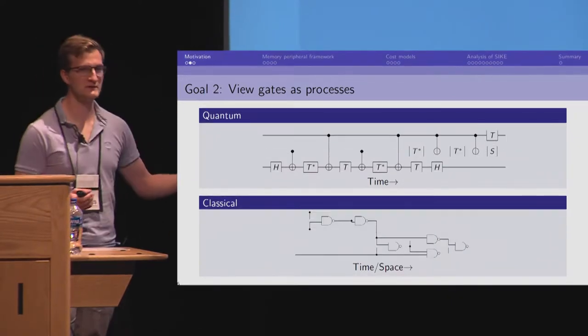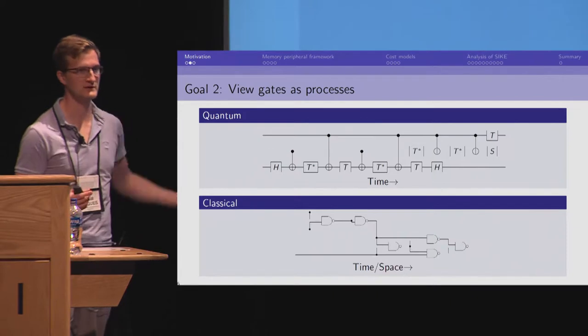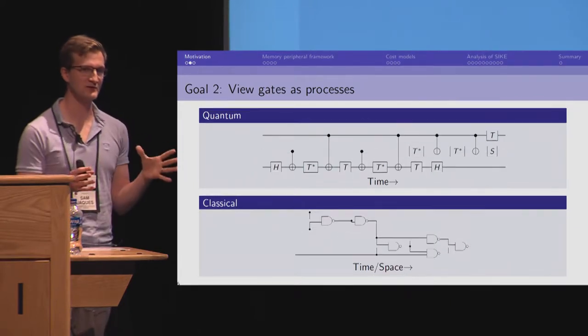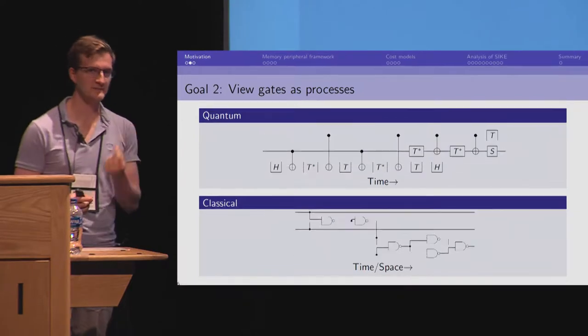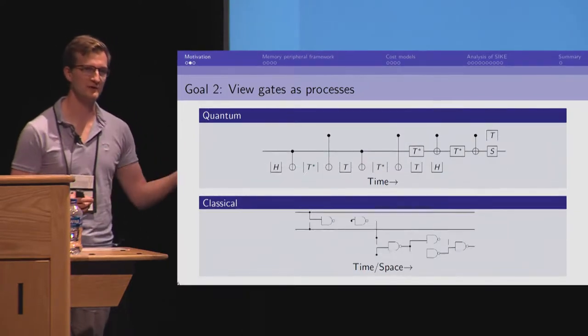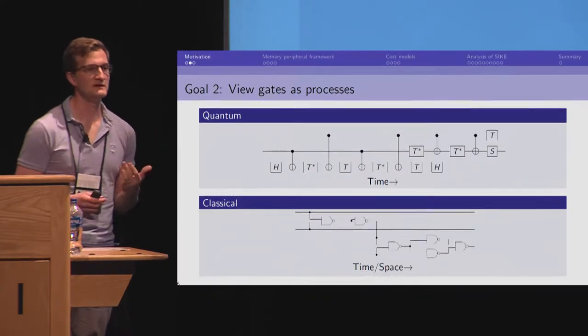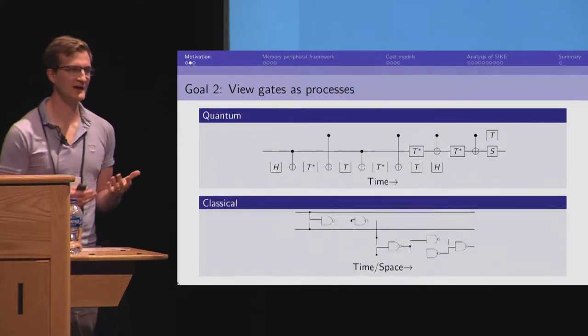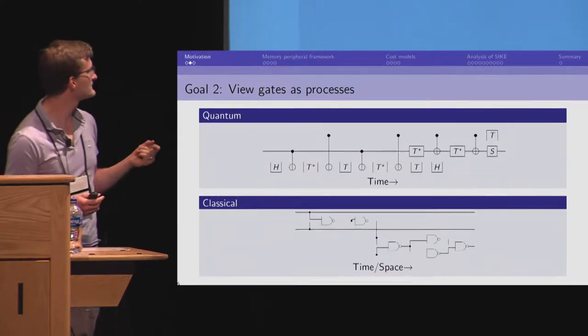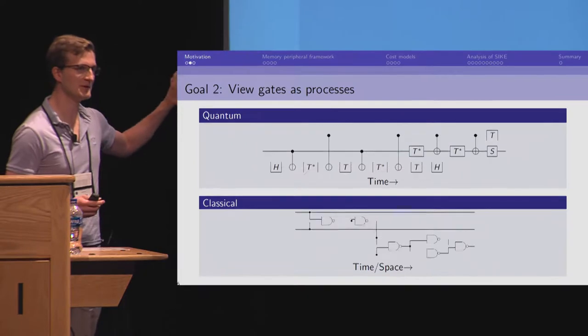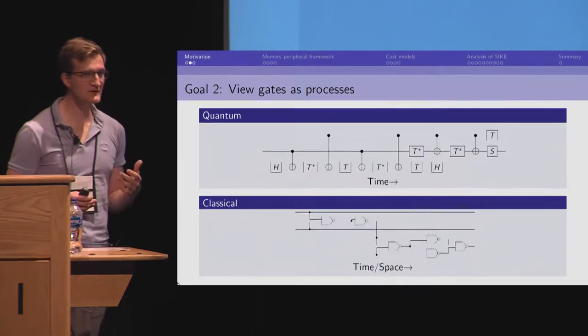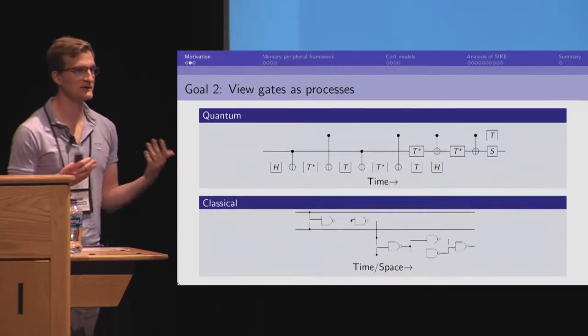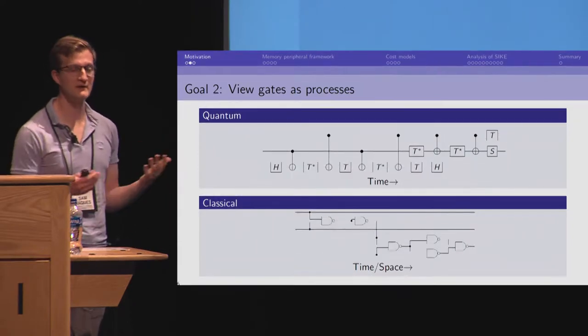But typically, we equivocate between time and space because we think we can take the circuit and we can print it onto a physical chip. And when we do that, the signals will propagate from left to right through the gates as time progresses. So, time and space intuitively feel equivalent here. And we don't usually worry about this, but that's not formally implied by the model. And it's especially not implied by the model of quantum computing where this may not hold because the technology may not have this property.